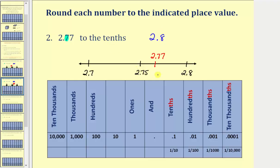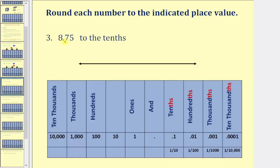Now let's look at two more examples that are a little bit more challenging. Here we're asked to round 8.75 to the tenths place value. This seven is in the tenths place value, so 8.75 would be between 8.7 and 8.8. Notice how 8.75 would be right in the middle, which means 8.75 is not closer to either of these values. In this case we have a special rule: when a value is right in the middle, we always round up. Therefore 8.75 rounds to 8.8 to the tenths place value.